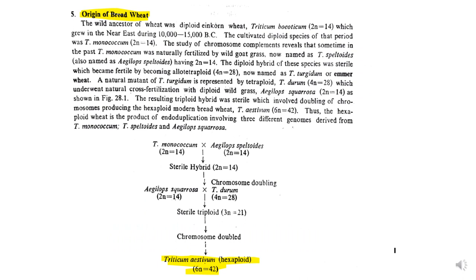Here we discuss how hybridization has resulted in the evolution of new species. Triticum aestivum, a hexaploid wheat, evolved from different Triticum species. Triticum monococcum — a diploid species — hybridized with Aegilops speltoides to form a sterile hybrid, which after chromosome doubling resulted in Aegilops squarrosa. This then hybridized with Triticum durum, and through further chromosome doubling gave rise to the hexaploid Triticum aestivum. This example was previously discussed in the context of polyploidy and numerical changes in chromosomes.